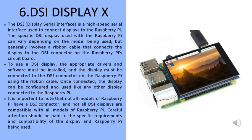The sixth part is the DSI display. DSI is a high-speed serial interface used to connect displays to the Raspberry Pi. The DSI display used with the Raspberry Pi can vary depending on the model, but generally involves a ribbon cable that connects the display to the DSI connector on the Raspberry Pi circuit board. To use a DSI display, the appropriate drivers and software must be installed, and the display must be connected to the DSI connector using the ribbon cable.